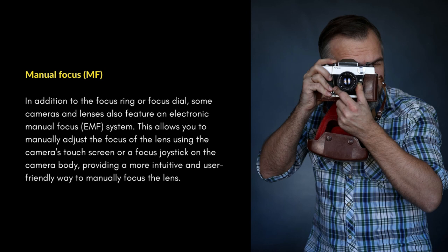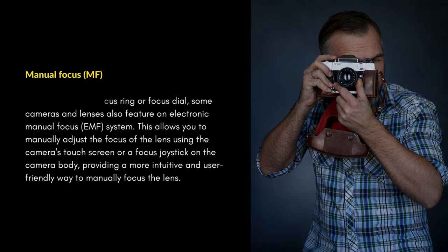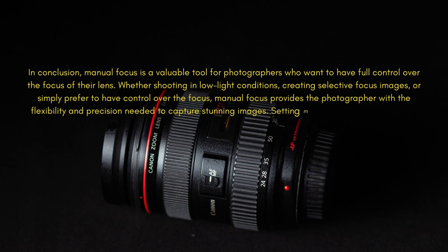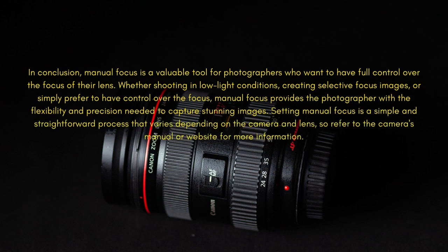In addition to the focus ring or focus dial, some cameras and lenses also feature an electronic manual focus system. This allows you to manually adjust the focus of the lens using the camera's touch screen or focus joystick on the camera body, providing a more intuitive and user-friendly way to manually focus the lens.